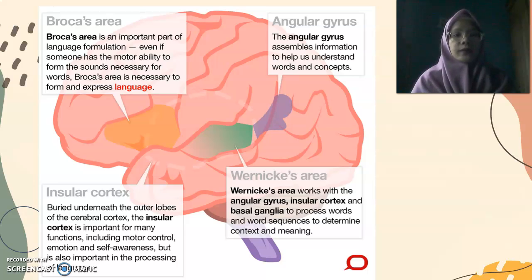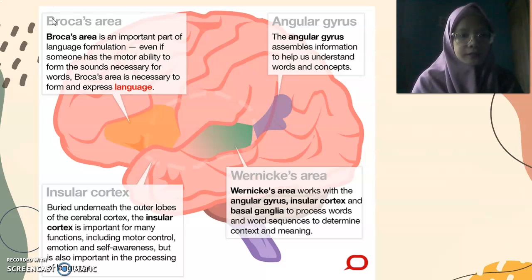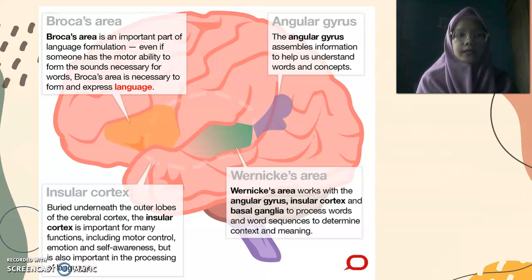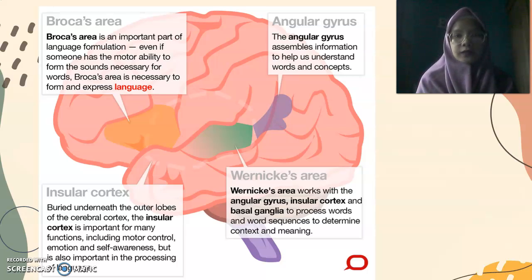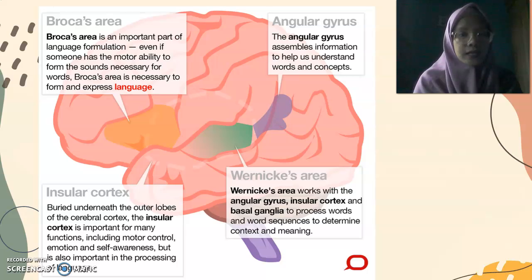Now here is a visual recap. The first of the four brain areas connected to language processing is Broca's area. Broca's area is an important part of language formulation — even if someone has the motor ability to form the sounds necessary for words, Broca's area is necessary to form and express language. Broca's area is primarily responsible for language production.